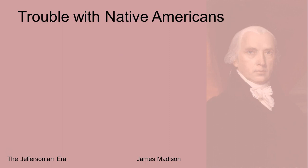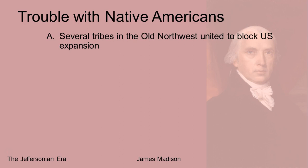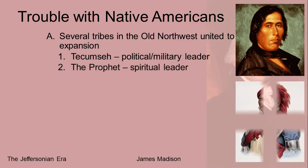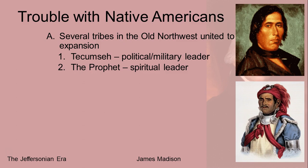Madison also had trouble with Native Americans who were trying to block U.S. expansion. His specific troubles involve Native Americans living in the Old Northwest — the Ohio and Indiana area. Several different tribes had formed an alliance in an attempt to stop U.S. expansion westward, starting to attack settlements and army units sent to deal with them. This alliance was led by two men. The first, Tecumseh, was the political and military leader of the alliance. The other leader was his brother, called the Prophet, who was more of the spiritual leader. These two worked together to unite the different tribes.